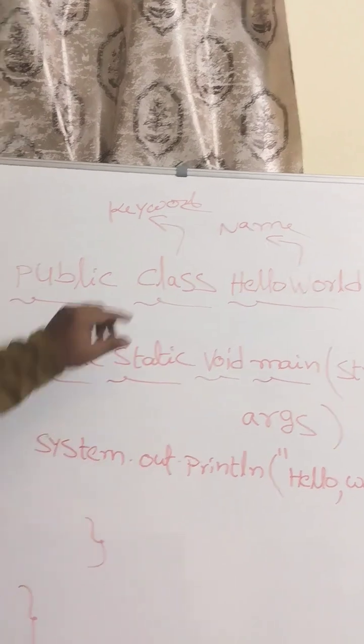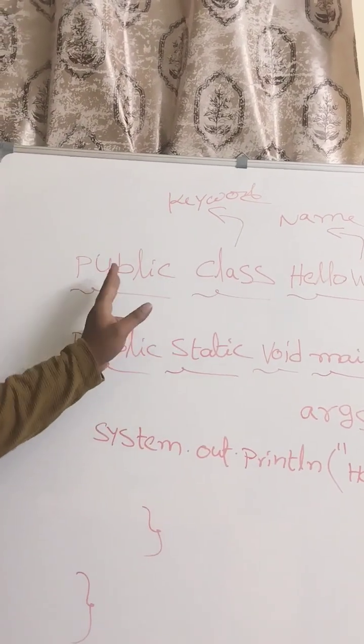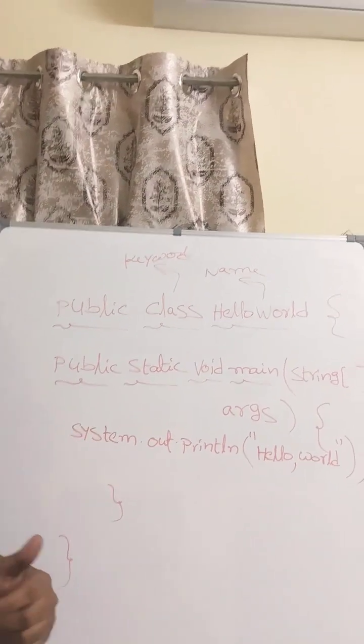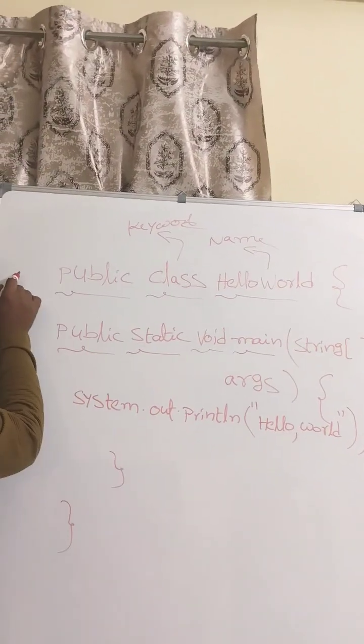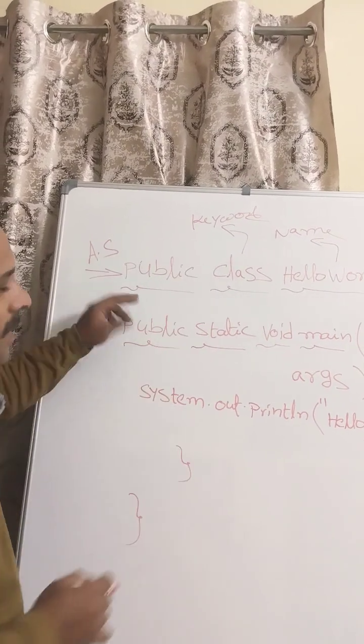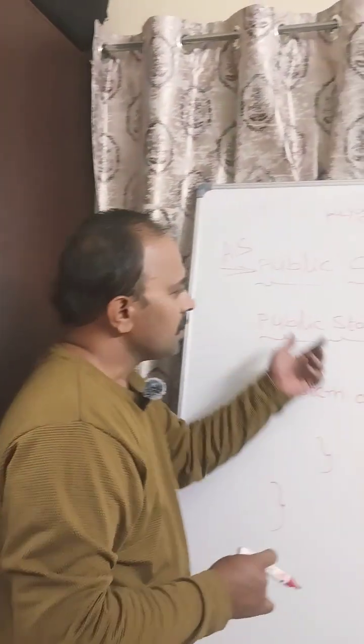Since we are creating a class, we need to use a keyword called 'class'. Now before the class, we have specified the access specifier, which is 'public'. That means this is a class that can be accessed from anywhere without any restrictions.